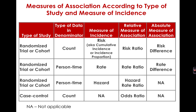In this table I've summarized different measures that can be used according to the type of study and type of data. I've grouped randomized trials or cohorts together because, although the study designs differ, the data that come out of them are similar: individuals are enrolled at baseline with an exposure or treatment status, then followed over time for outcomes. Whether your denominator is a count or a person-time denominator will determine whether your measure of incidence is a risk or a rate, and in turn whether your measure of association is a risk ratio or a rate ratio. Other alternatives are risk differences and rate differences.